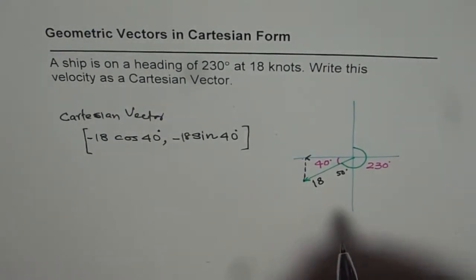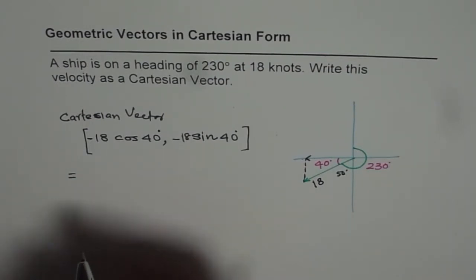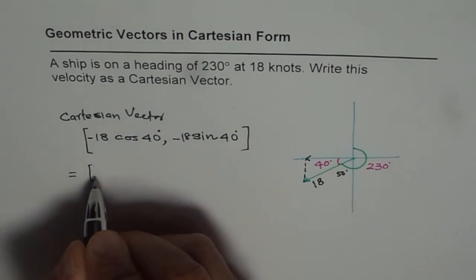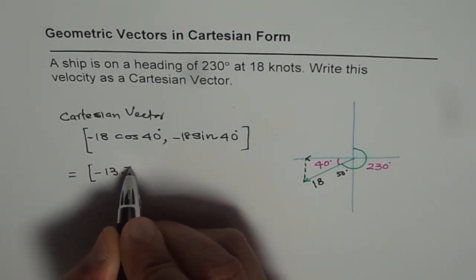So that is how we can get the Cartesian coordinate. So let us use the calculator and find the answer. So it is cos of 40 degrees times 18. That gives us minus 13.79.